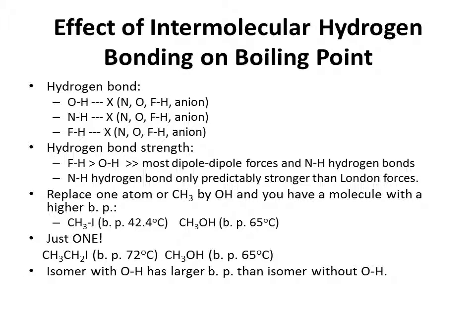Isomers in which one isomer has an OH and the other one doesn't are also easy to compare. The isomer with the OH will have a higher boiling point than the one without the OH. Here's an example of where hydrogen bonding beats dipole-dipole attractive forces: diethyl ether — an isomer without an OH — has a dipole from the two CO bonds that are not canceling each other out, and a boiling point of 34.6 degrees Celsius, versus the isomer with an OH group, 1-butanol, with an enormously higher boiling point of 117.6 degrees Celsius. The hydrogen bonds between the OH groups in 1-butanol are much stronger than the dipole-dipole forces in diethyl ether, causing 1-butanol to have an enormously higher boiling point.